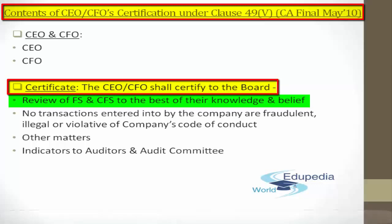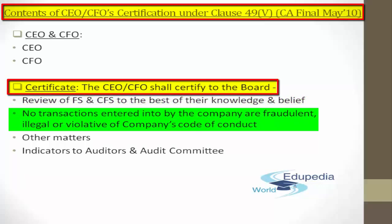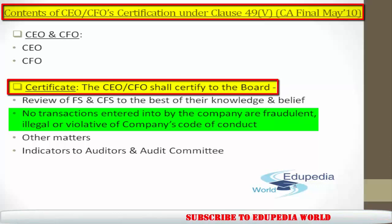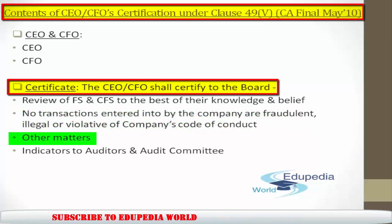The statements are in compliance with existing accounting standards and applicable laws and regulations — that is number one in their certification. They must provide to the board that they have reviewed the financial statements and cash flow statements to the best of their knowledge. Number two: to the best of their knowledge and belief, no transaction has been entered into by the company during the year which is fraudulent, illegal, or violative of any of the company's code of conduct.